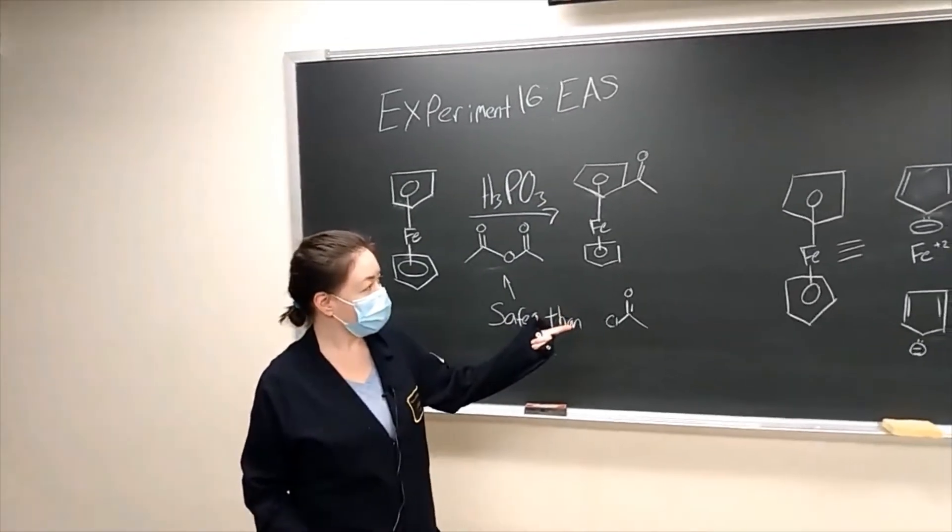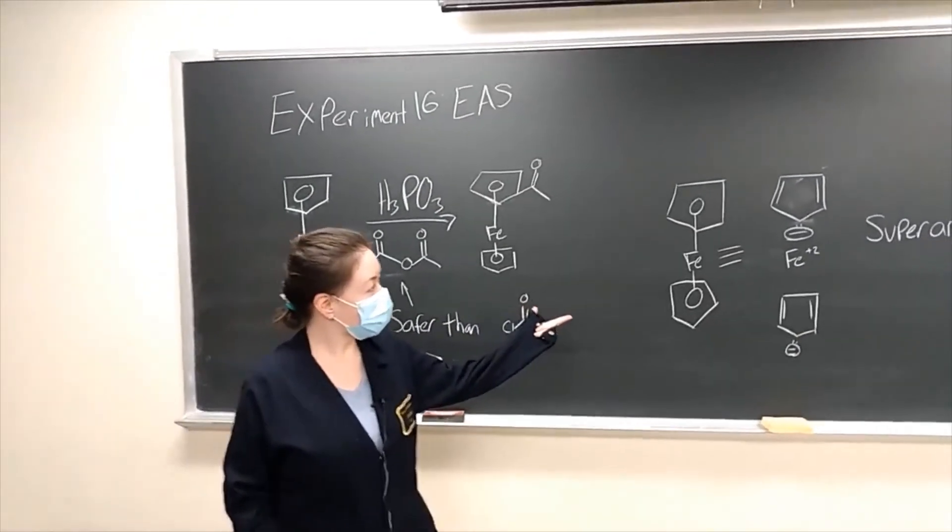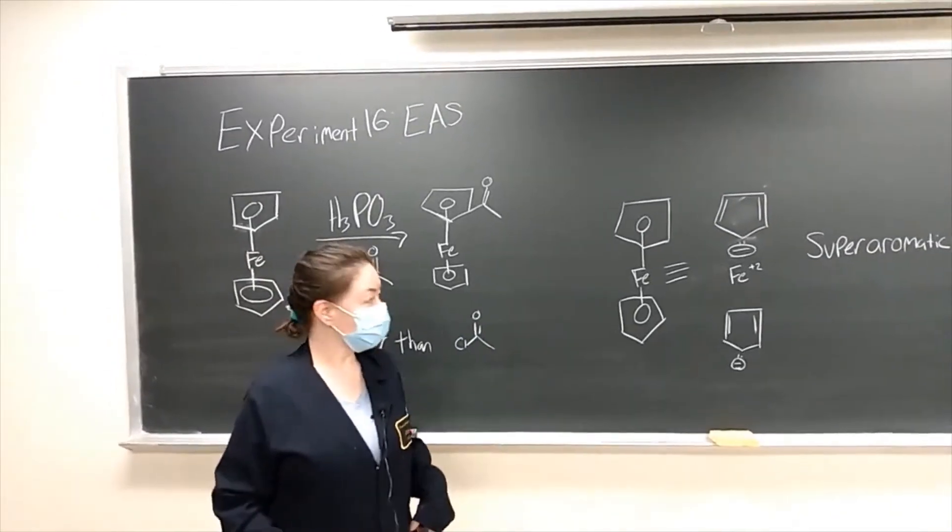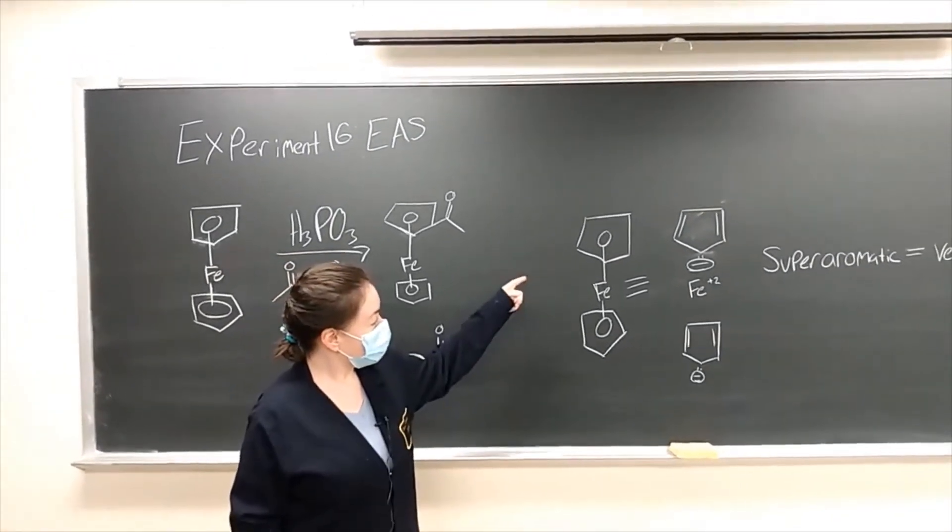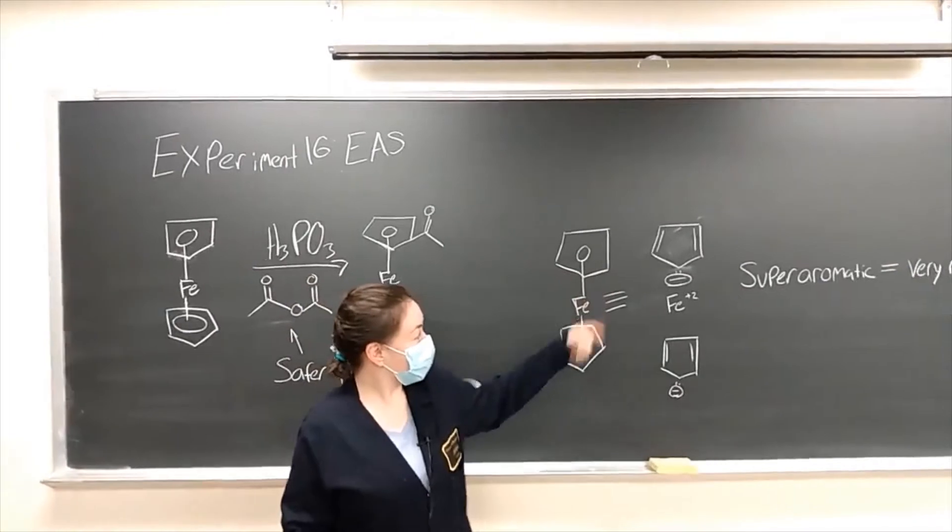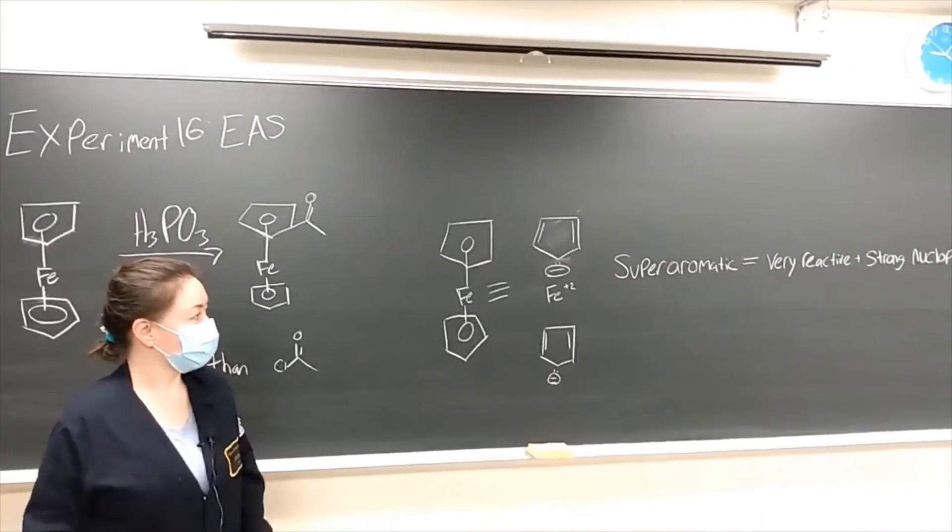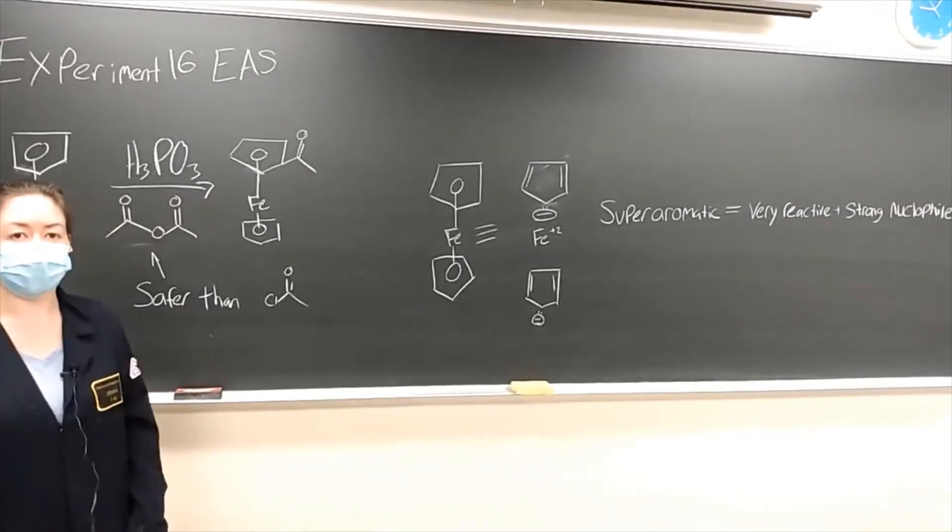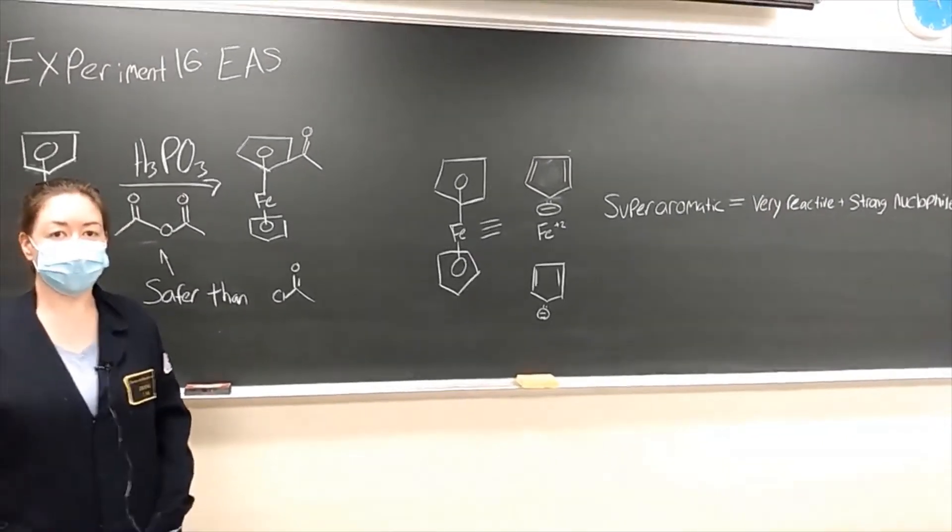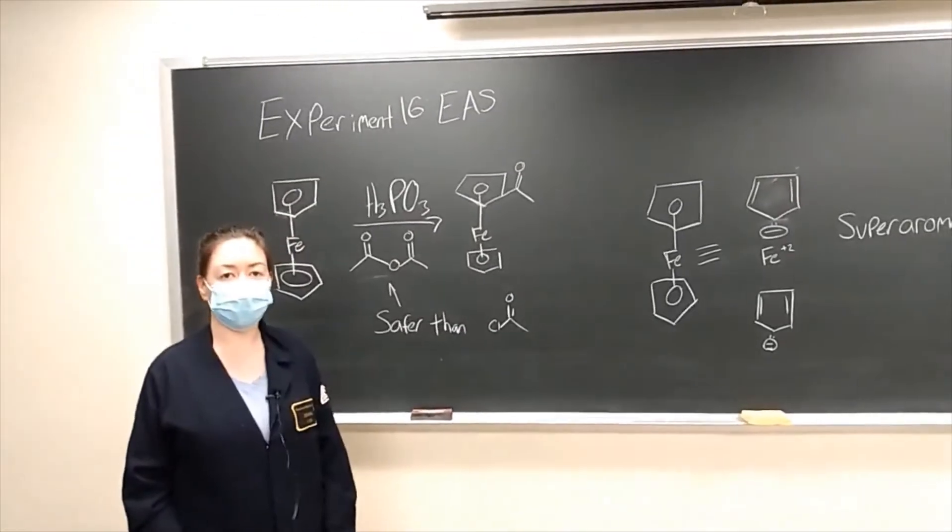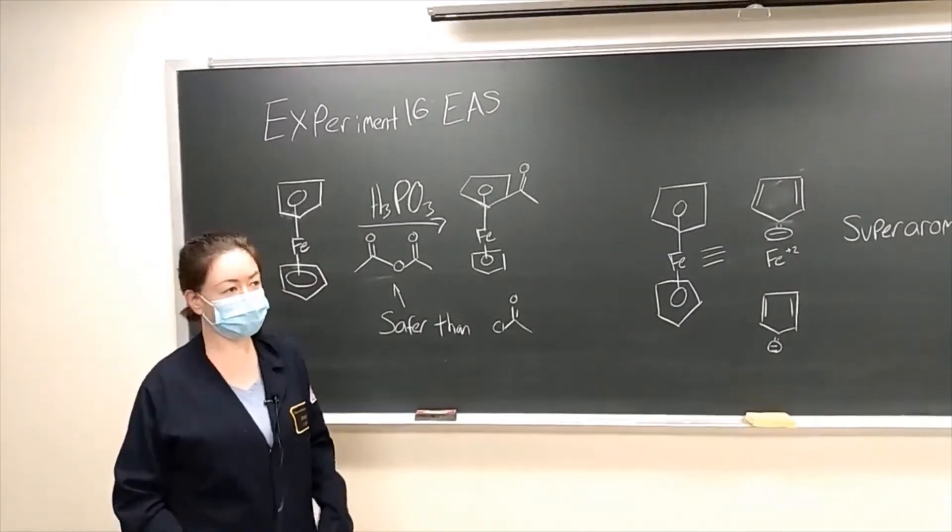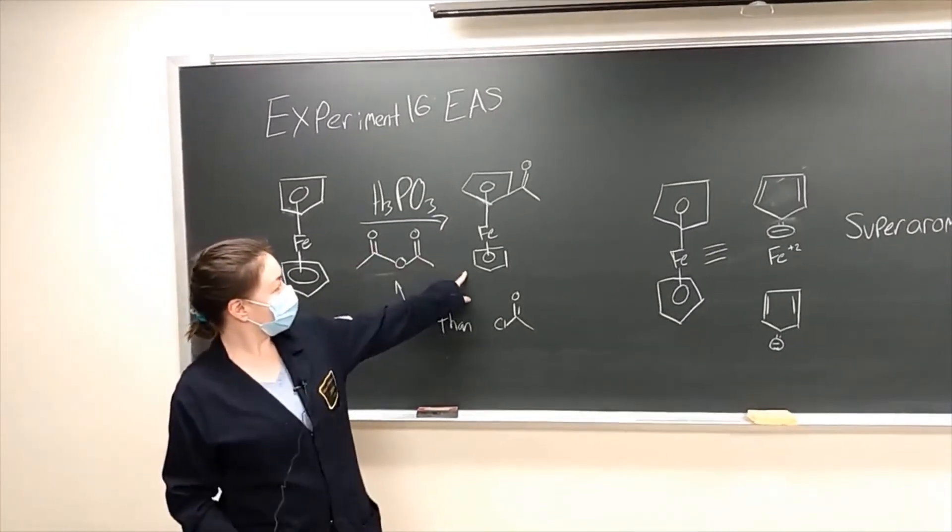A little bit about ferrocene - it's considered a super aromatic compound. Each of these rings actually has an anion distributed through the five carbons, which makes them very reactive and a strong nucleophile. So this total reaction will take about 15 minutes to isolate this as the main product.